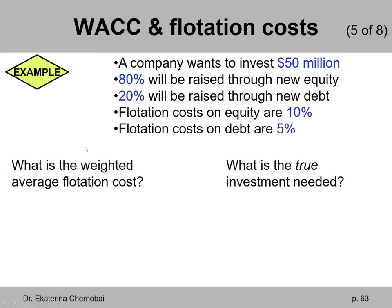Let's look at the following example. A company wants to invest $50 million into a new project. 80% will be raised through new equity and 20% will be raised through new debt. Flotation costs on equity are 10%, and flotation costs on debt are 5%. Two questions: What is the weighted average flotation cost, and what is the true investment needed for this new project?